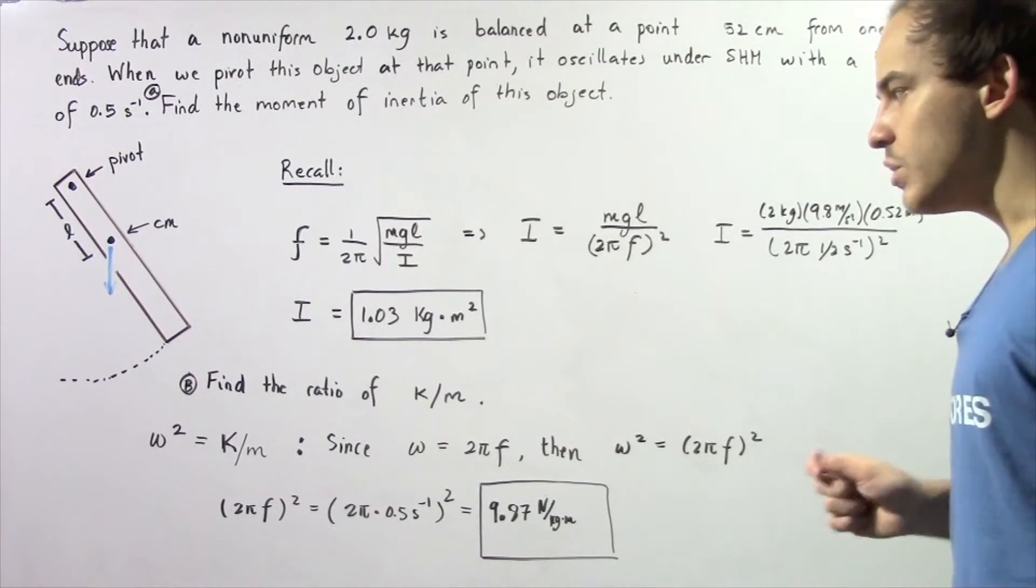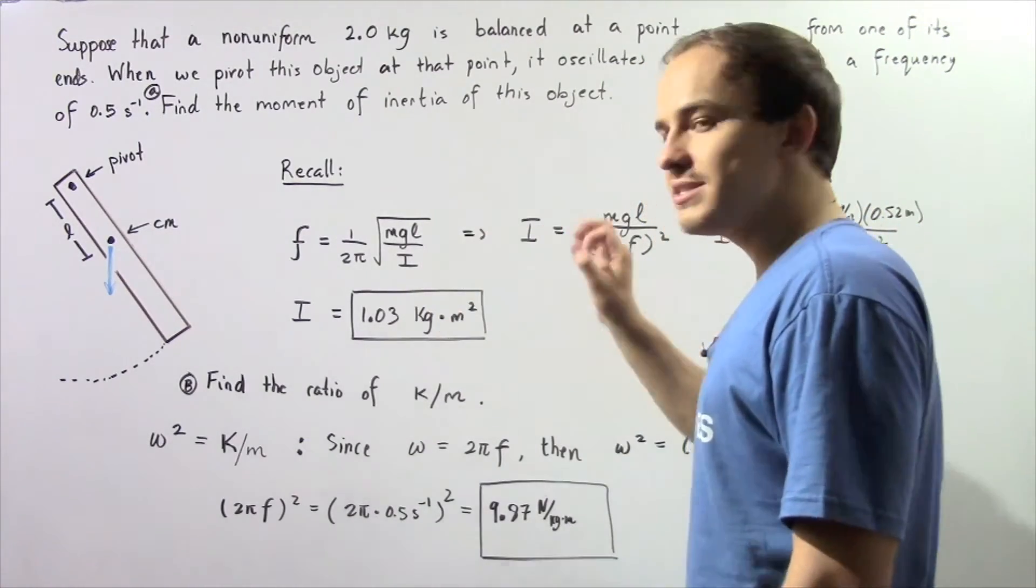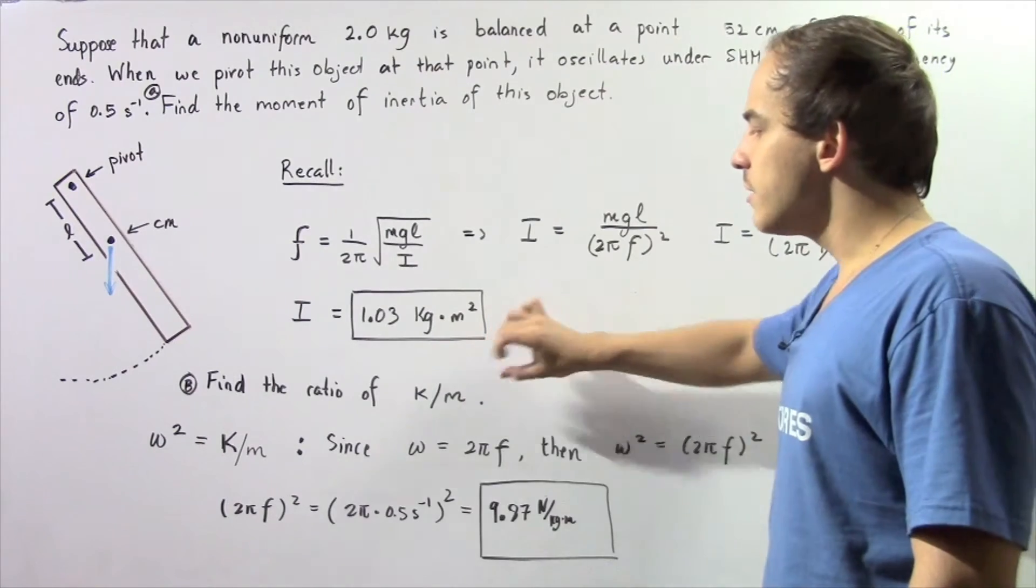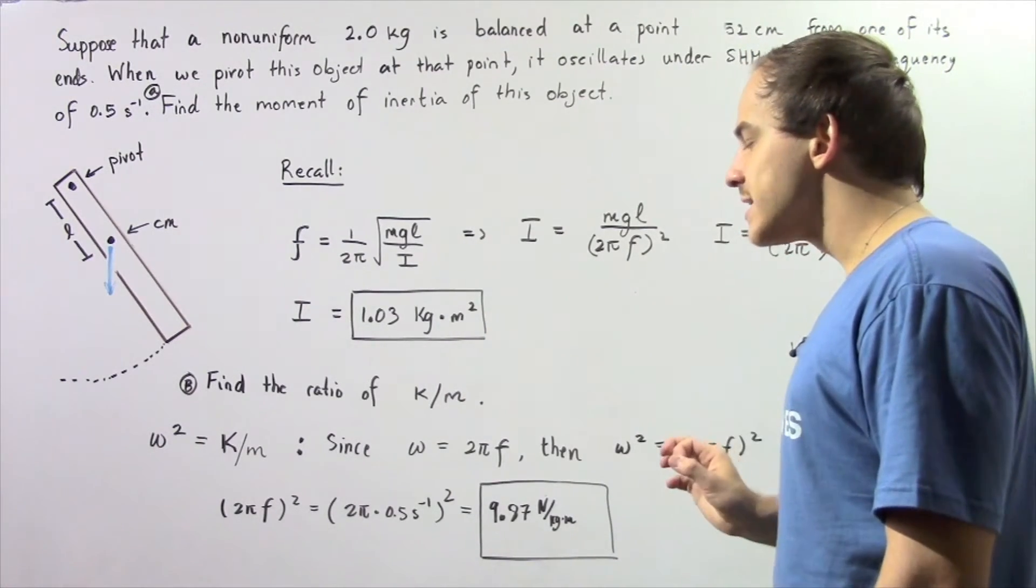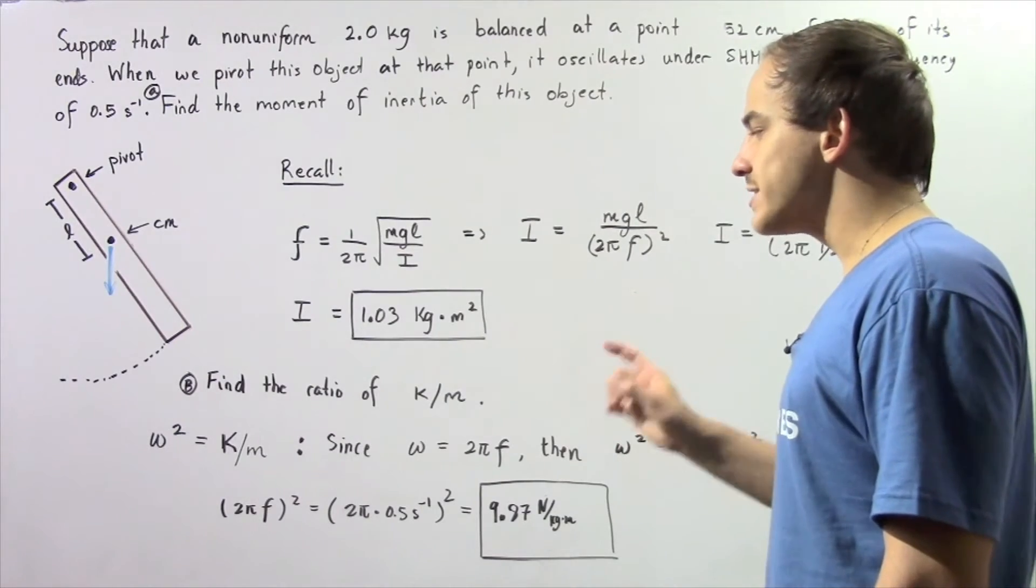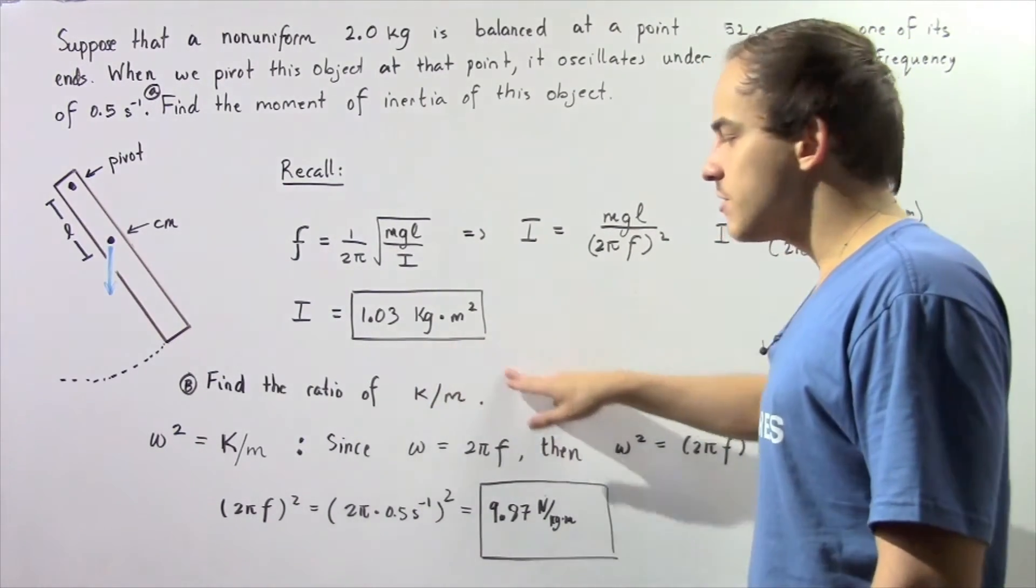Now what about part B? We want to find the ratio of k, the spring stiffness constant, to the mass of the object. Notice we are given the mass, but we are not given the spring stiffness constant. So how exactly can we find this ratio?